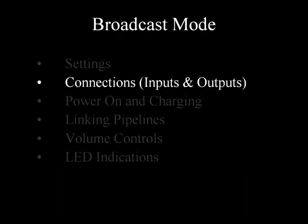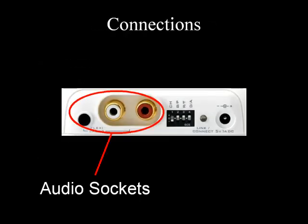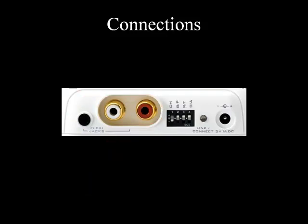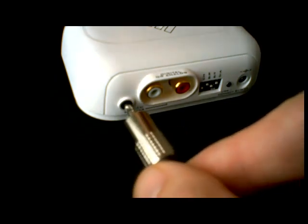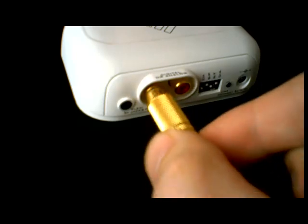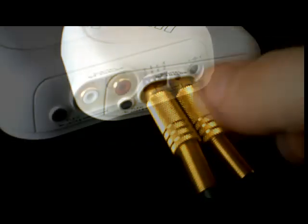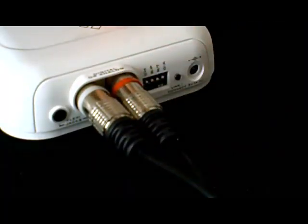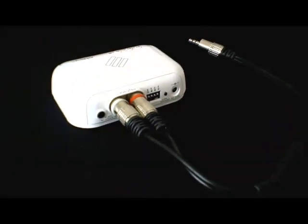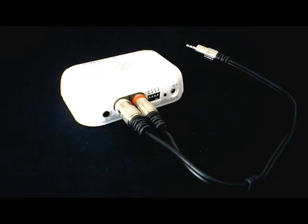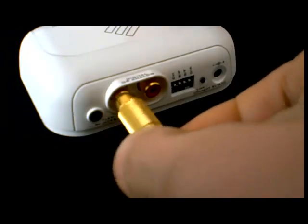Now we look at the options for connecting audio to and from the pipeline. On each pipeline you have three sockets on the back for audio input and output: a 3.5mm stereo socket and two RCA sockets. On the transmitter unit in analogue mode, you can use the 3.5mm stereo socket as a stereo analogue input, or you can use the RCA jacks as left and right analogue inputs. The analogue input and transmission is always stereo, so if you are using a mono source be sure to use both RCA jacks and an adapter or a Y cable. Transmitting in digital mode, you can use either one of the RCA sockets as an SPDIF input.